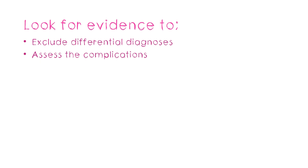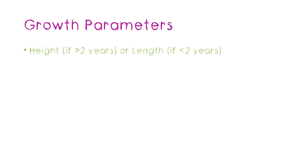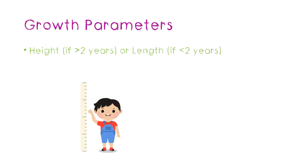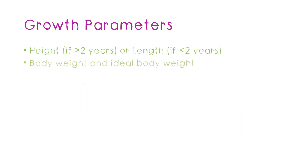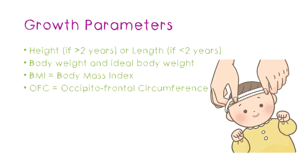The first thing we do in all pediatric patients is the growth assessment, because growth is an integral part of childhood. The first thing is to measure height or length. Height is measured when a child is more than two years, because it takes around two years for the child to be able to stand and walk. If the child is less than two years, we use something called an infantometer to check the length. The next thing is to measure the weight, ideal body weight, and the BMI. And lastly, the occipitofrontal circumference, or OFC.